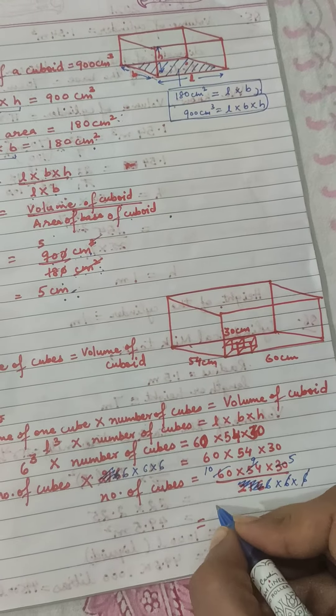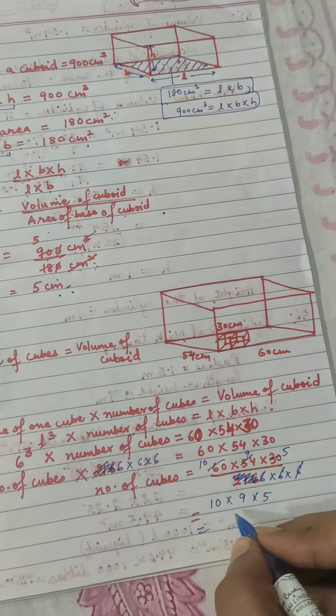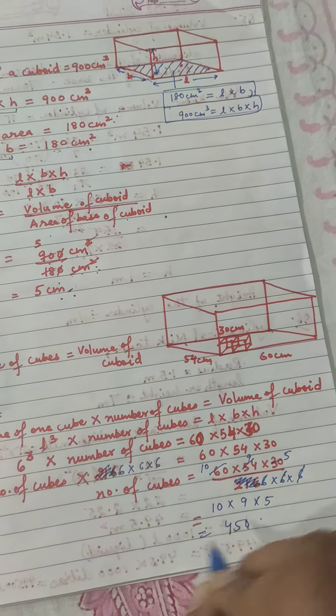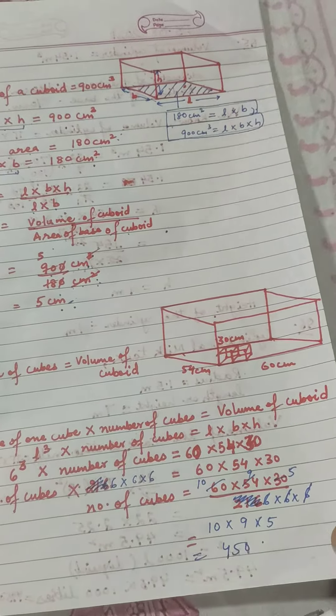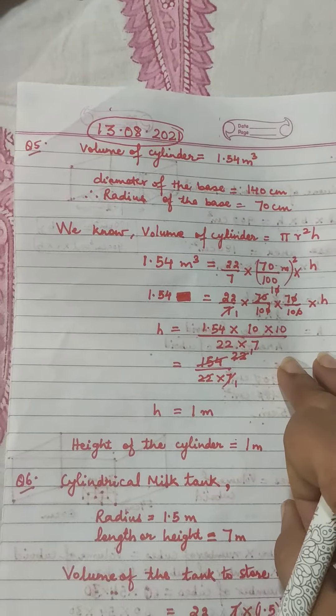Our answer will be 450. Number of cubes - so this has no unit. Number of cubes has no unit, okay children. So this is how we will do question number 4. Now coming to question number 5,